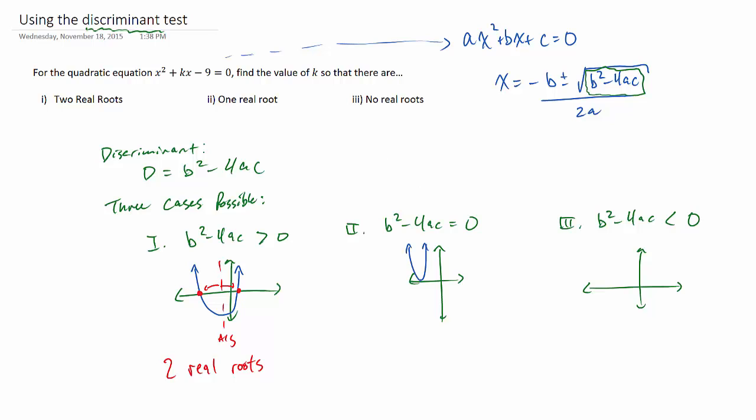Second case is the very specific case where you only get one real root. That's because your vertex is right on the x-axis. It is the x-intercept. And the last case is when you try to square root a negative, you get zero real roots, which means you actually don't have any x-intercepts.